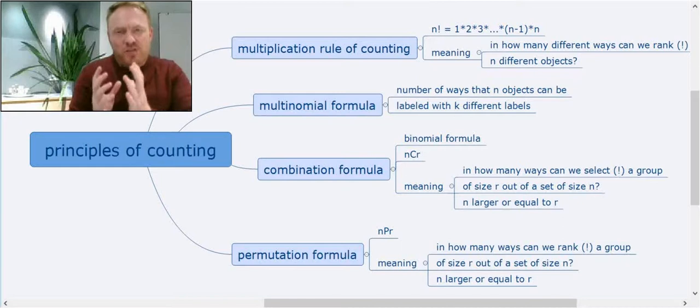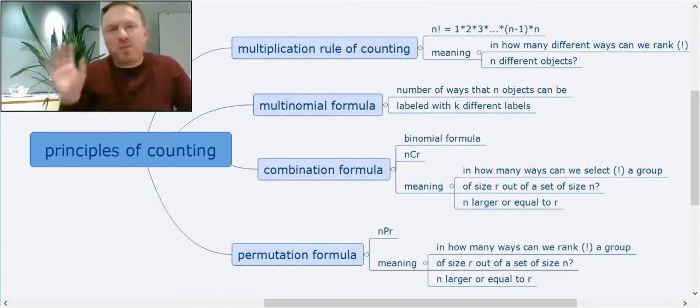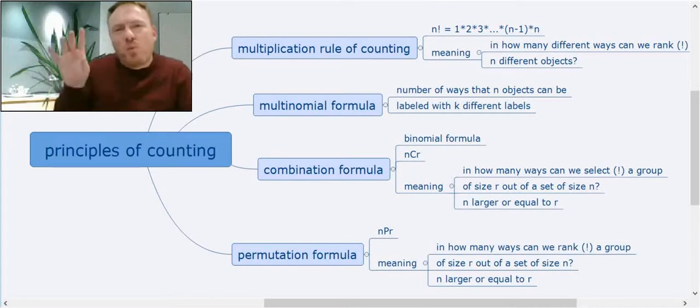I try to explain the necessary things. What's the difference between multiplication rule of counting, multinomial formula, combination formula, and of course the permutation formula.